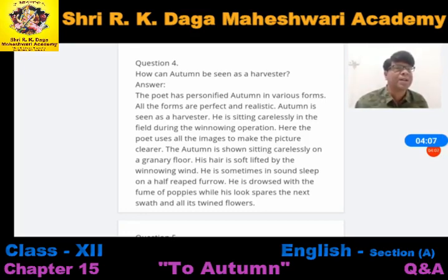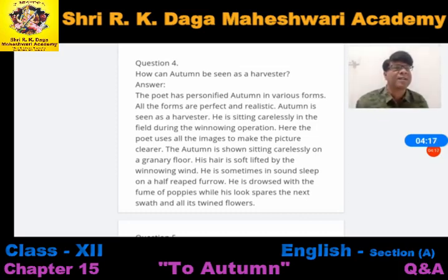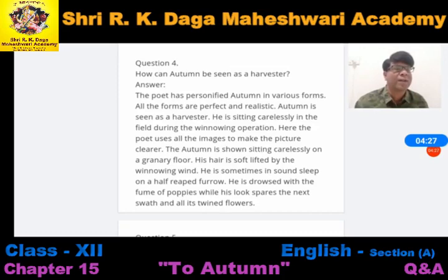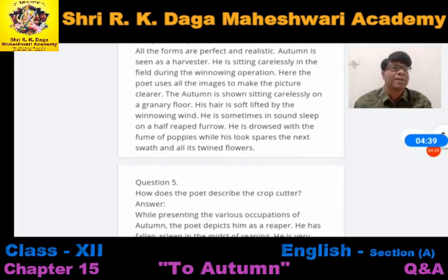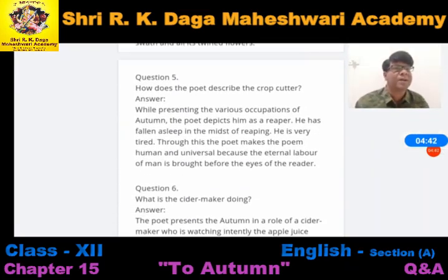Her hair is softly lifted by the winnowing wind — wo hawa dwara utha ja raha hai. She is sometimes in sound sleep, as though she has drunk something — jaise usne kuch pee rakha ho, drawn by the fume of poppies. His look spares the next swath as all its twined flowers — showing that he has not yet finished the work.